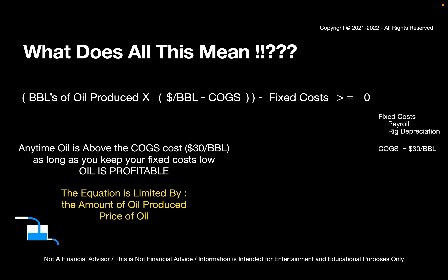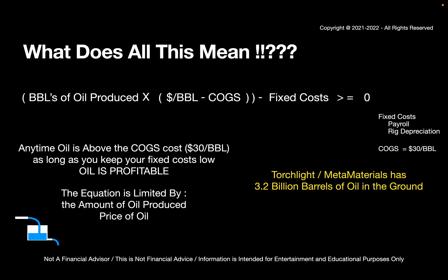If you look at this equation — and I'm leaving it up for a reason — the equation is limited by two factors: the amount of oil being produced and the price of oil. Those are the two most critical factors. So now we know that Torchlight and Metamaterials has about 3.2 billion barrels of oil in the ground. We also know that the price of oil is significantly higher than the COGS cost today. So just keep that in mind.